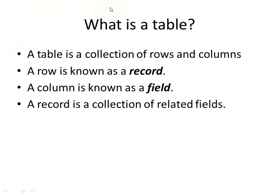So what is a table? A table is a collection of rows and columns — we've seen that in our friends table that we did just not too long ago. In a database, a row is known as a record and a column is known as a field. So a record is then a collection of related fields.